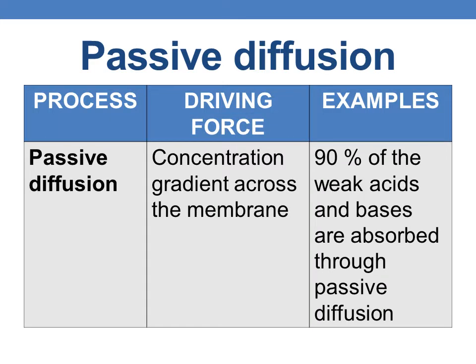The major driving force for passive diffusion is the concentration gradient across the membrane. The majority of drugs are weak acids or bases, and about 90 percent of these drugs are usually absorbed through passive diffusion, making it the major absorption mechanism.